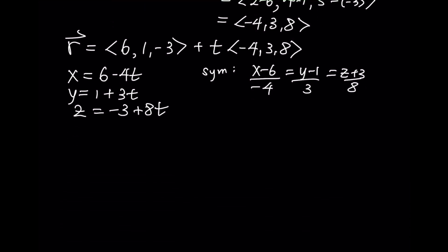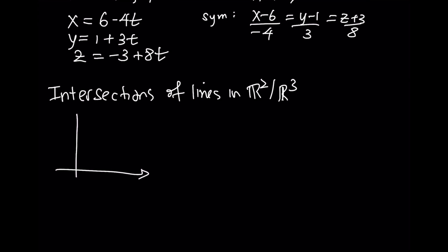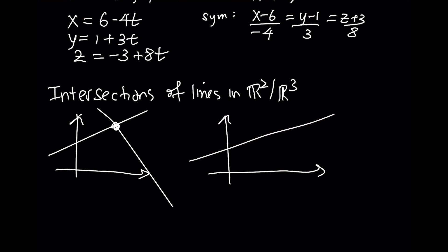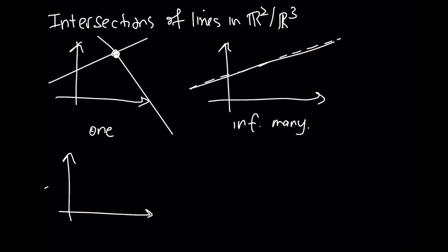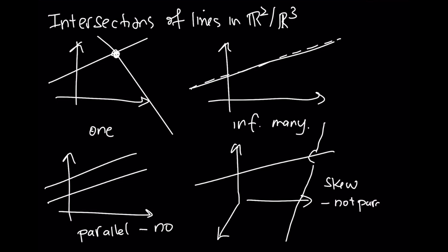A useful topic is the intersection of lines in R2 and R3. Lines can intersect at a single point, or they could be overlaid on top of each other giving infinitely many solutions. But lines don't have to intersect — you could have parallel lines with no intersection. It's also possible in R3 for lines not to touch in a different way: you could have non-intersecting lines that are not necessarily parallel. This is called a skew line — where the lines are not parallel and do not intersect.